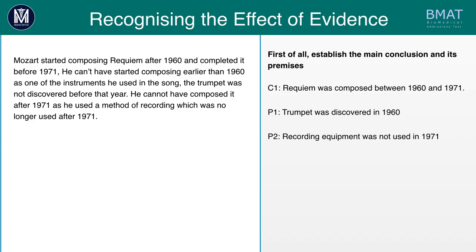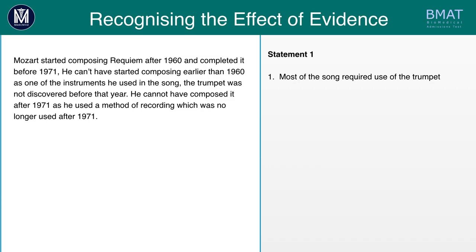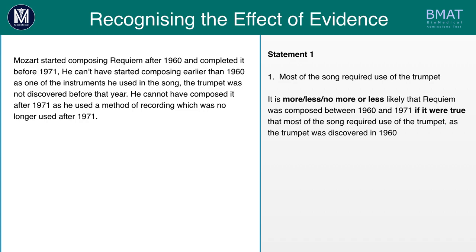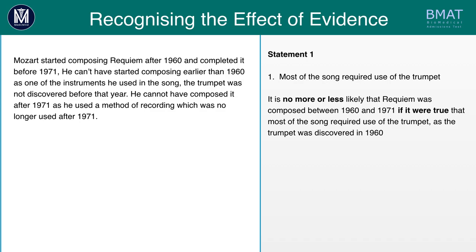Statement one is: most of the song required use of the trumpet. Using the if it were true test, we ask whether it is more, less, or no more or less likely that Requiem was composed between 1960 and 1971 if most of the song required the trumpet — given that the trumpet was discovered in 1960. In fact, it is no more or less likely, because the composer could have started composing before 1960 and added the trumpet parts afterwards. This, therefore, does not strengthen the argument.